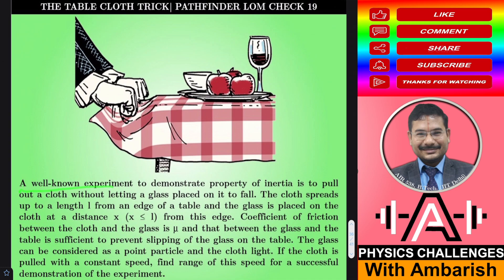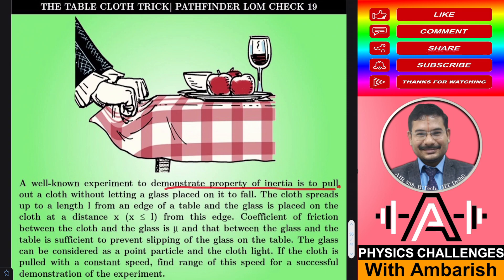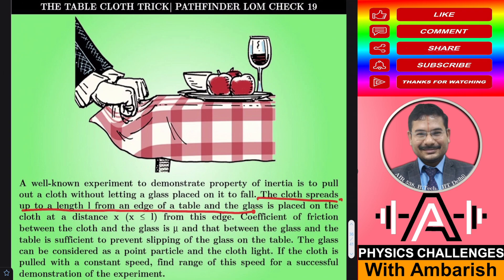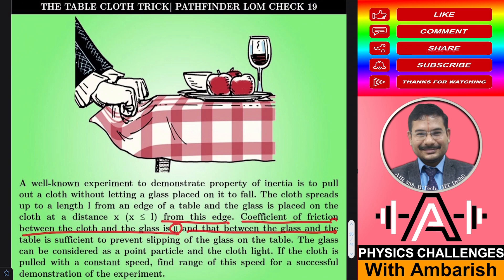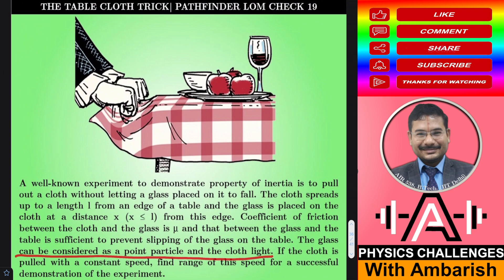A well-known experiment to demonstrate the property of inertia is to pull out a cloth without letting a glass placed on it fall. The cloth spreads up to a length L from the edge of the table and the glass is placed on the cloth at a distance x, where x is less than or equal to L from this edge. The coefficient of friction between the cloth and the glass is mu, and that between the glass and the table is sufficient to prevent slipping. The glass can be considered as a point particle and the cloth light. If the cloth is pulled with a constant speed, find the range of speed for a successful demonstration of the experiment.